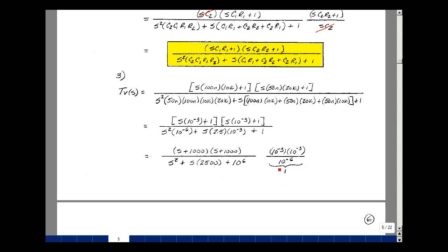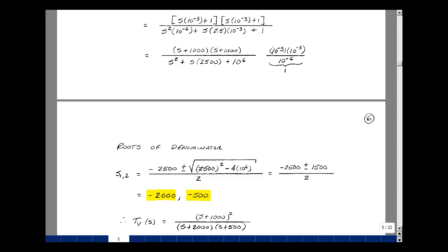Let's have a scalar in front that's equal to 1. Now we need to find the poles, so let's find the roots of the denominator. Using the quadratic formula, I have minus 2,500 plus or minus 2,500 square minus 4 times 1 times 10 to the 6th divided by 2 times 1. That's minus 2,500 plus or minus, this turns out to be 1,500, and then divided by 2.